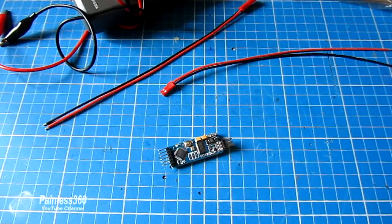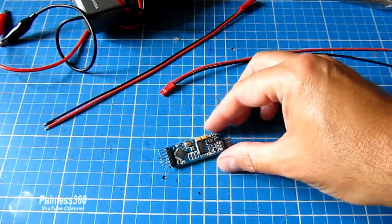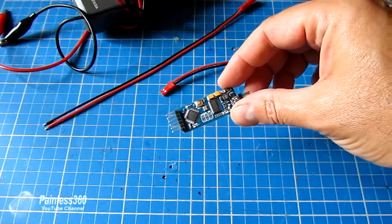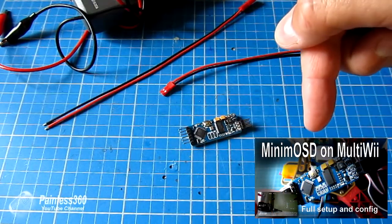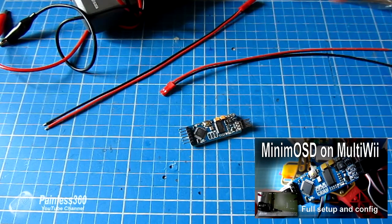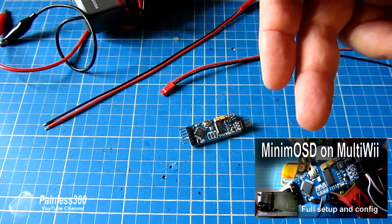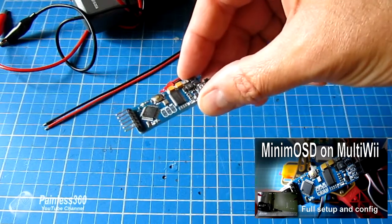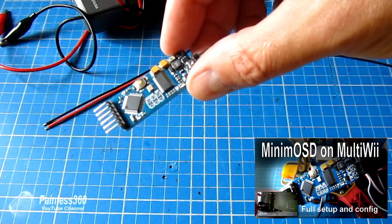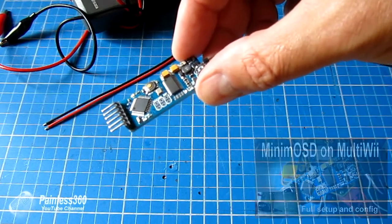In this video, we're going to look at the MinimOSD board. I have a couple of other videos that talk about how you set this up. The first one takes you through a step-by-step method for configuring this and connecting it to a standard MultiWii, where you don't have to change the code on the MultiWii itself. You just use the signals that come out of the UART and FTDI ports naturally to have your on-screen display.